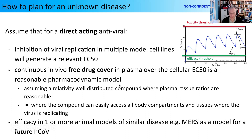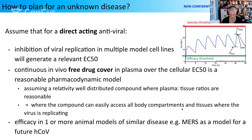This model makes a couple of assumptions: we assume our compounds are relatively well distributed, that plasma-tissue ratios are reasonable, and that the compound can easily access all the body components and tissues where the virus is replicating. There's a little more to this than just free drug over plasma. We also want to see efficacy in one or more animal models of a similar disease — in our case, we're using MERS as a model for a future lethal respiratory coronavirus.